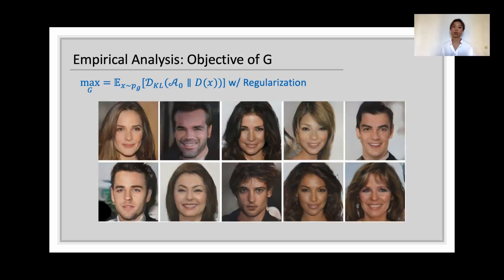Therefore, we introduce a regularization term into G's original objective, which is realized by pulling fixed samples closer to either the real samples or the real anchor A1. And the sample's quality improved significantly, as we can see in this snapshot.